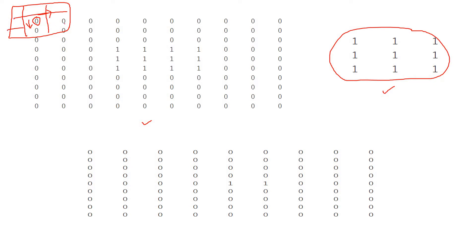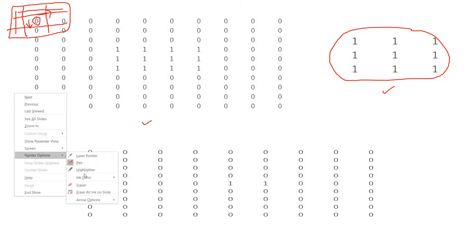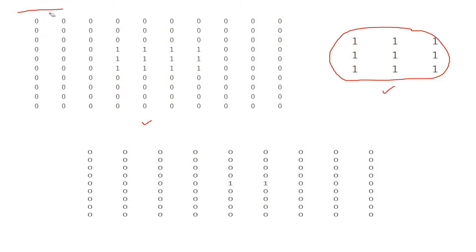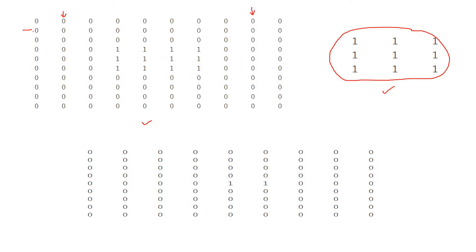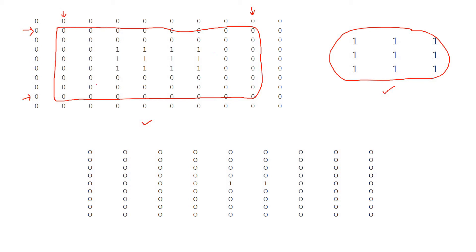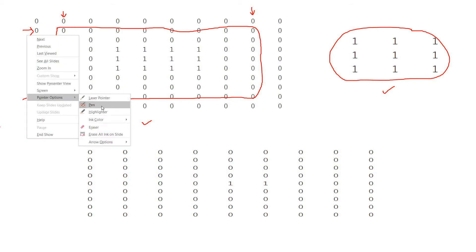When placing the structuring element at the boundary, parts of it fall outside the image, so there are no values for those regions. You can either avoid the boundaries or pad zeros in the boundary part and then apply the morphological operation there as well. For simplicity, I am avoiding the boundary — so we will start from the second column, go up to the second-to-last column, and similarly for rows, giving us the inner region for morphological erosion.